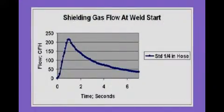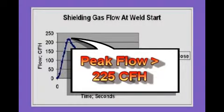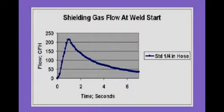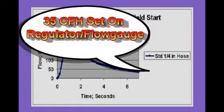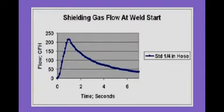Unfortunately, most MIG welders set high gas flow rates at the weld start. This is a gas flow graph of a fabricator making MIG weld repairs. Peak starting flows were measured in excess of 225 CFH — well in the turbulent flow area — and flow was measured above 75 CFH for 4 seconds, pulling air into the gas stream and causing internal weld porosity. The welder knew the blast of gas at the weld start was causing internal porosity, since his welds often failed ultrasonic inspection.